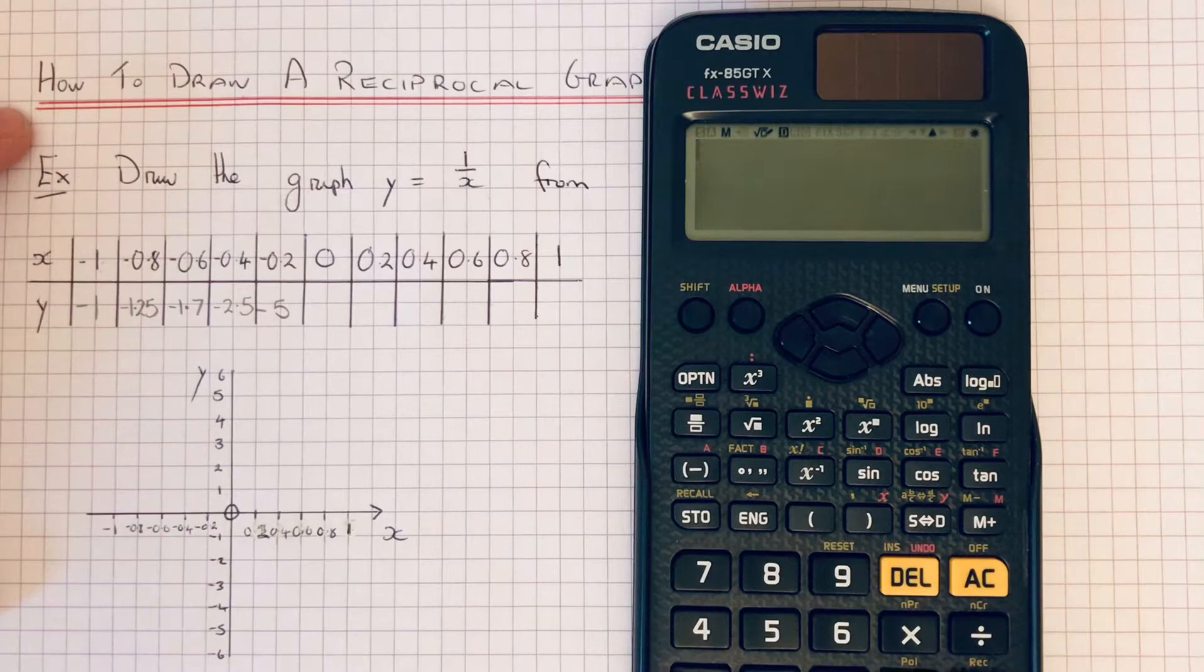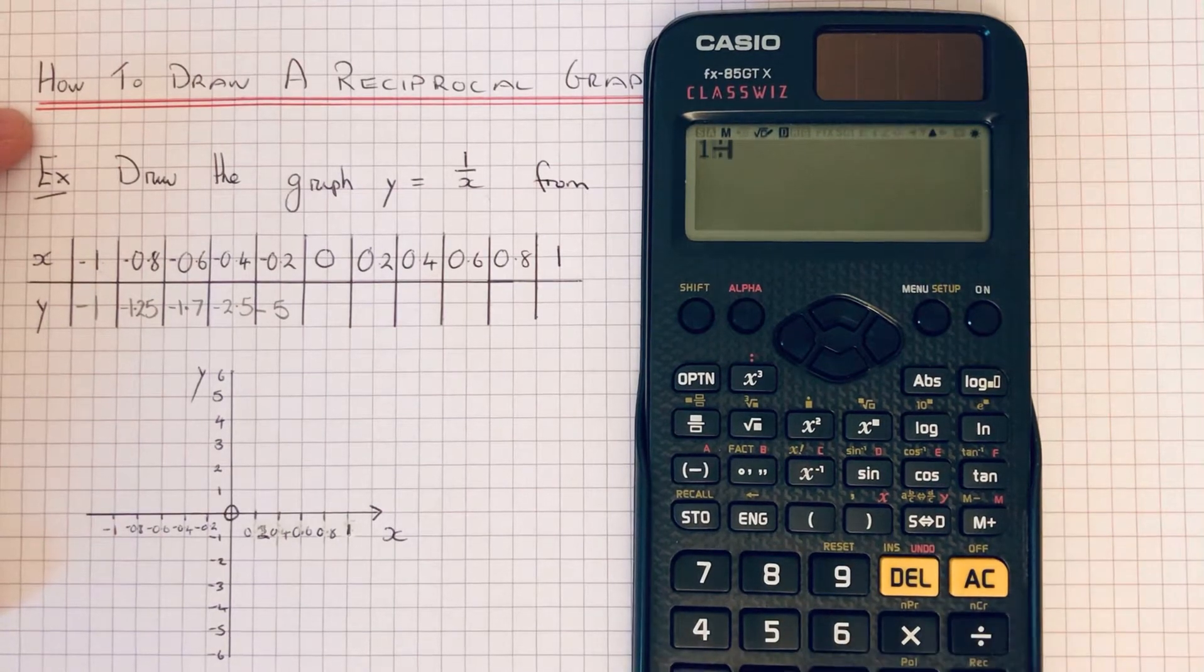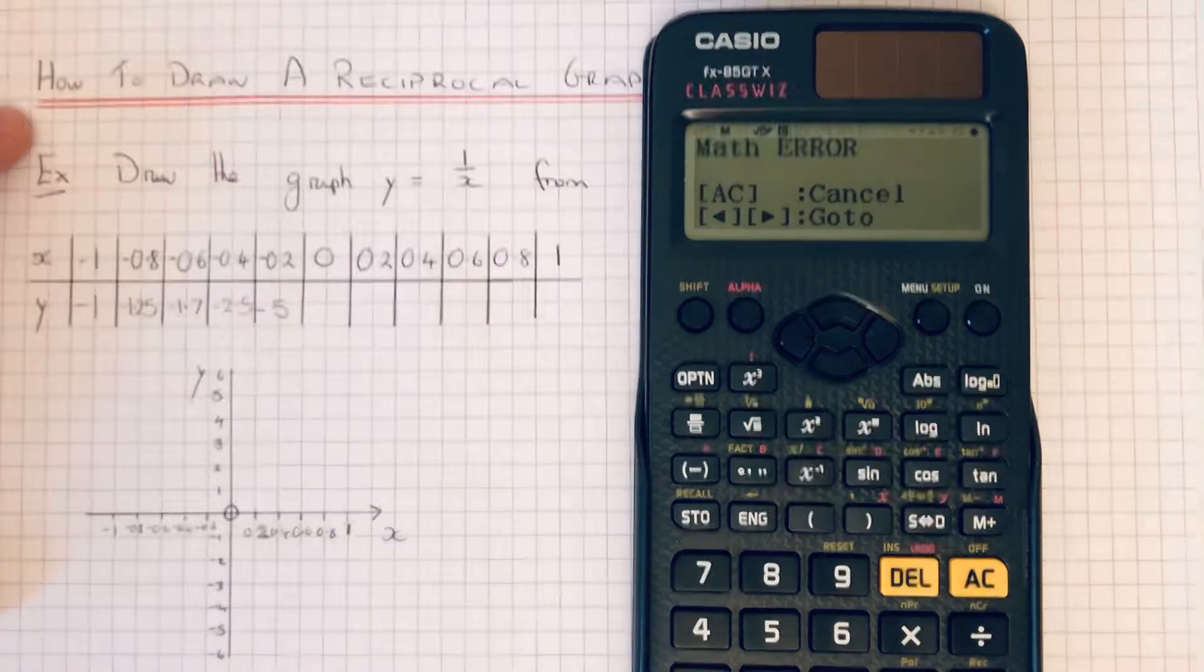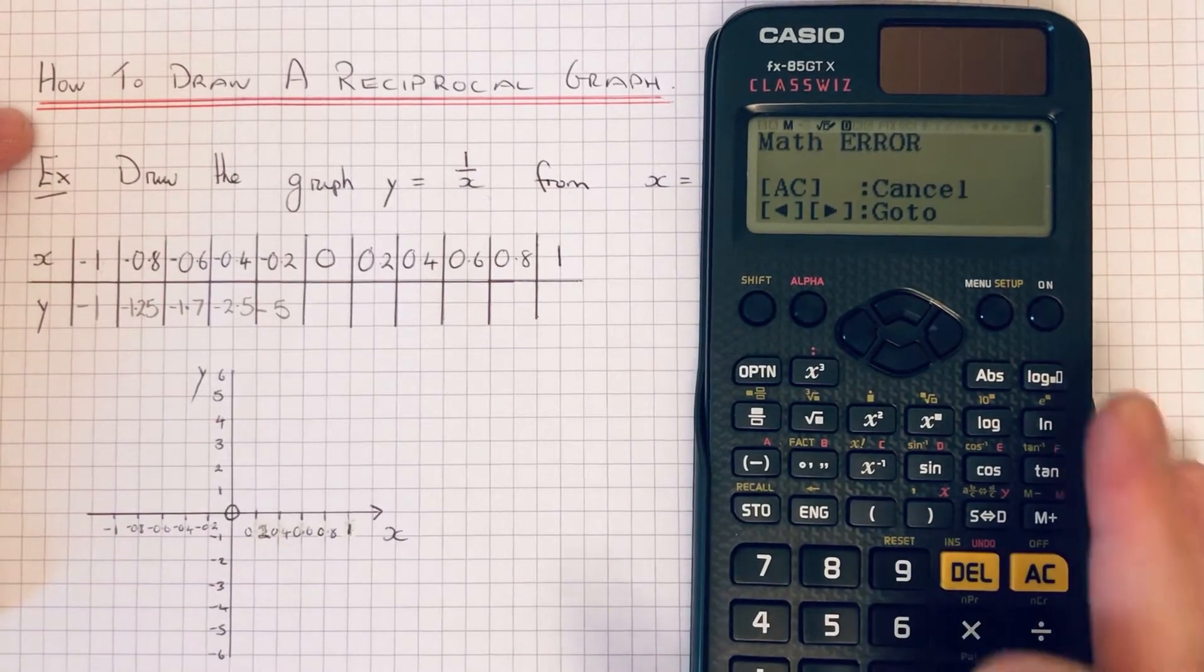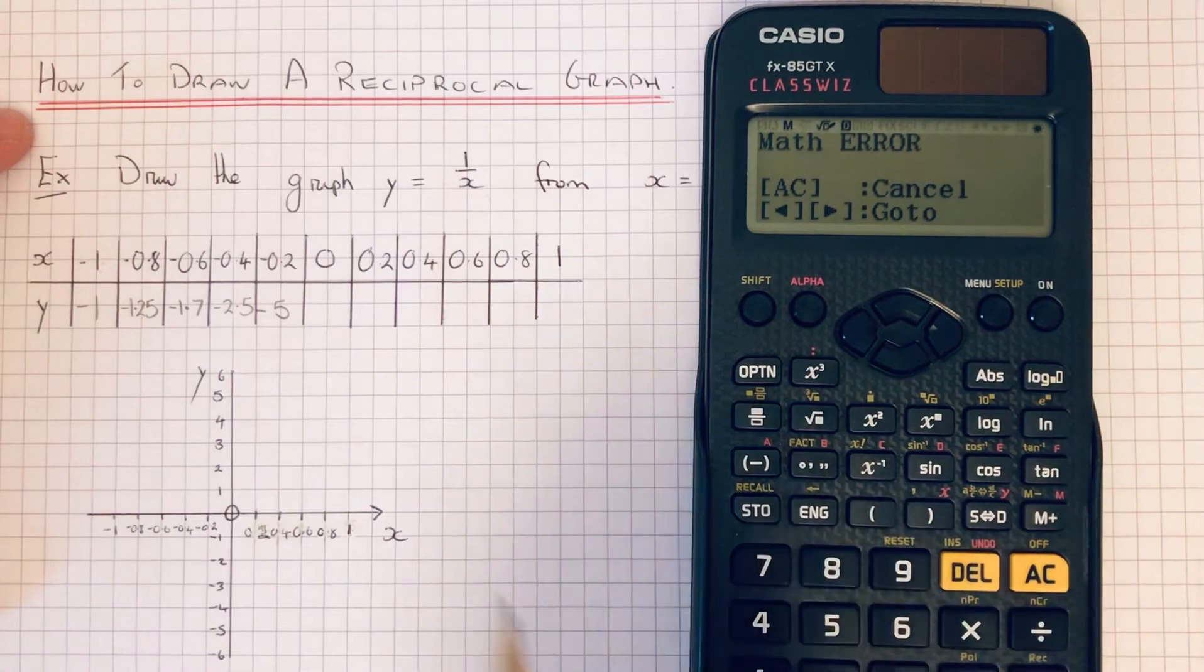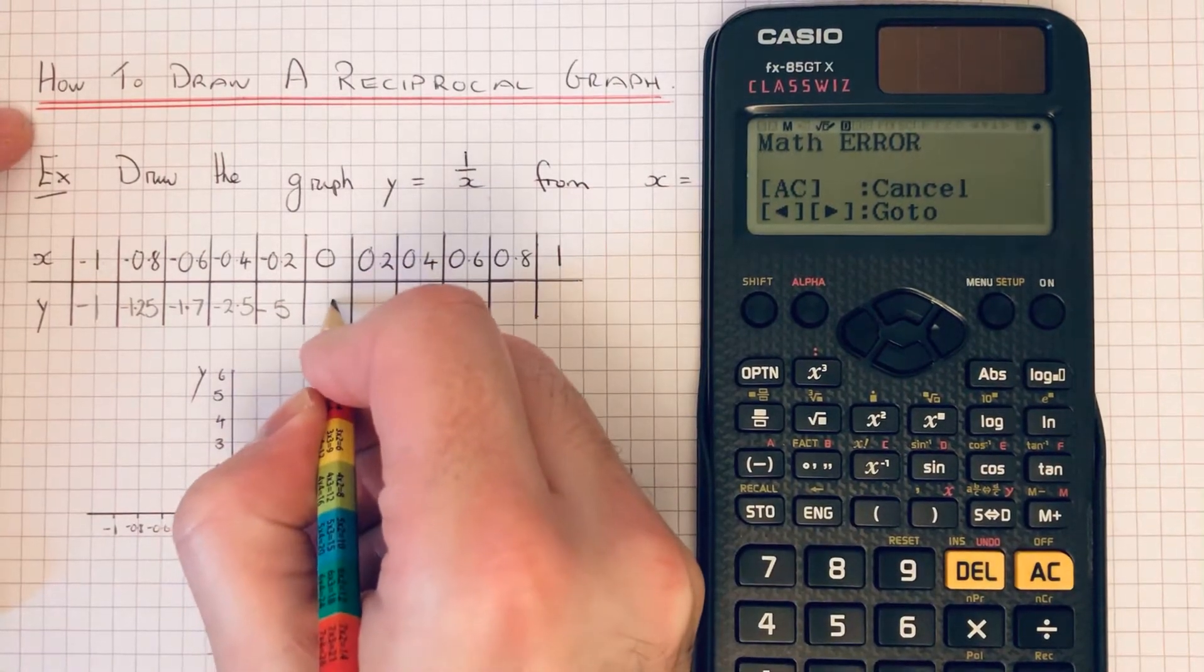And then we've got x equals 0, so we do 1 divided by 0. On our calculator we get an error message. That's because we're dividing a number by 0. So this is where the graph goes to infinity.